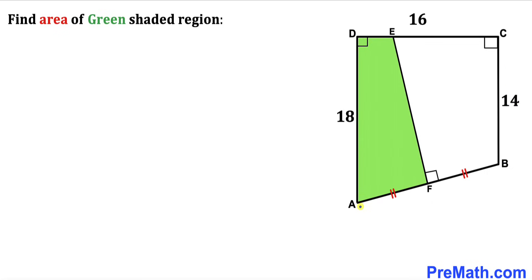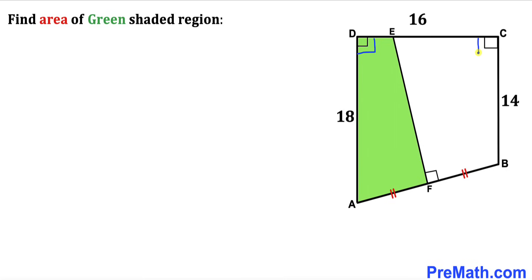Moreover, segment AF equals segment FB, meaning F is the midpoint. Furthermore, the angles at D, E, and the right angles at the corners are 90 degrees each. Our task is to calculate the area of this green shaded region.